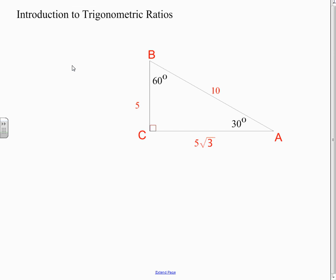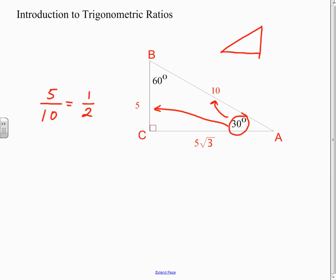If I'm standing in this 30-degree angle and I look across, that side over there — the opposite side of where I'm standing — is 5. And the hypotenuse is 10. That turns out to be one half. We discovered in some of those explorations that that's going to happen every time, no matter how big the triangle is. We also drew this ideal 30-60-90 triangle where the sides are 1, 2, and root 3. All 30-60-90 triangles are similar to that.